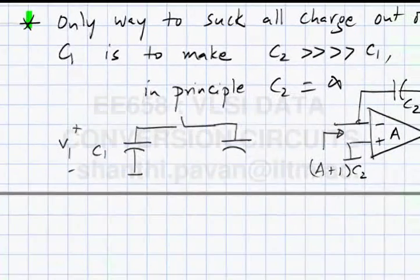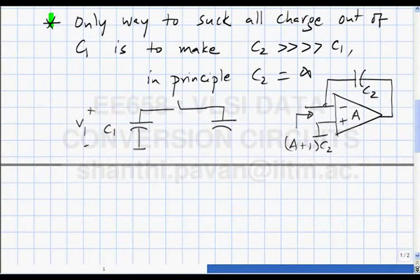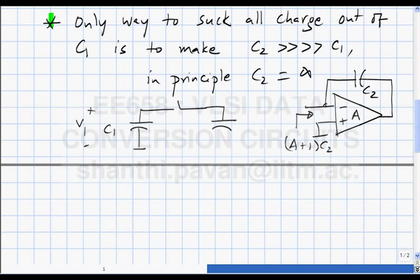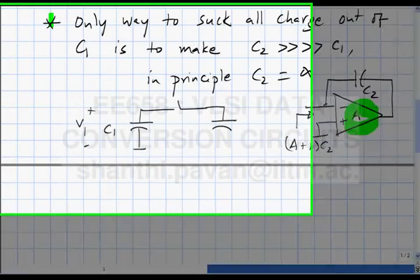Even though you have only a small capacitor C2, by putting it in feedback around a voltage-controlled voltage source with a very large gain, you can make it look like a very large capacitor. In principle, if A tends to infinity, the looking-in capacitance will appear infinite.